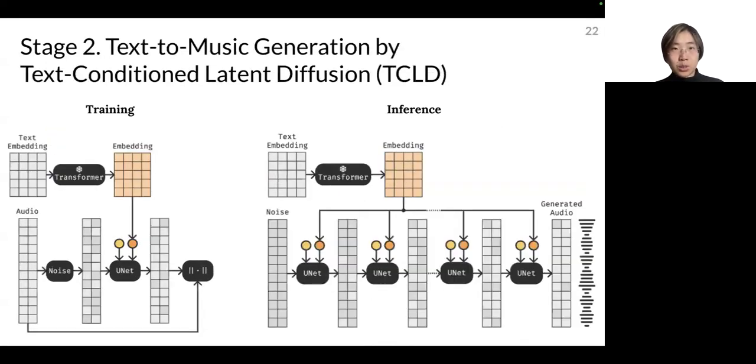Then going to stage two, text to music generation. So what we do here in addition to the diffusion model structure is that we condition it on text. Basically, we feed text as an embedding and go through transformer. So the resulting text embedding is conditioned during the training phase in the U-net structure, as we mentioned before. And then we go through the general diffusion training.